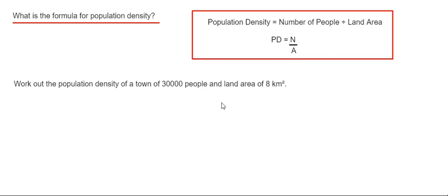So let's have a look at an example. I'm going to work out the population density of a town of 30,000 people and a land area of 8 kilometers squared.